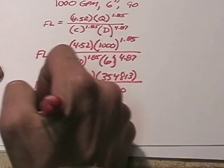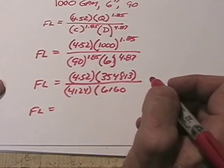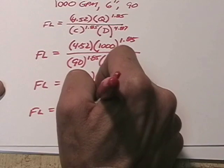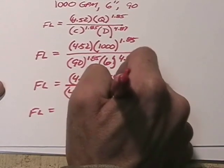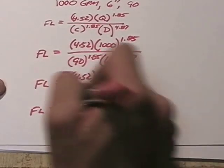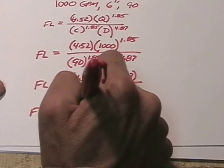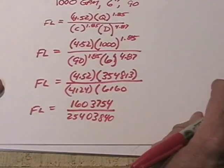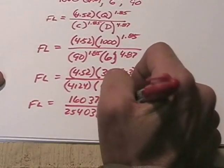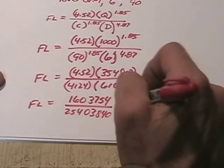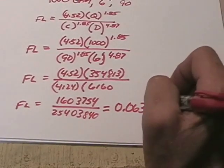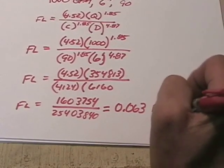When we carry this out even further, our friction loss equals 1,603,754 divided by 25,403,840. And if we divide that out, we come up with 0.063 psi per foot.